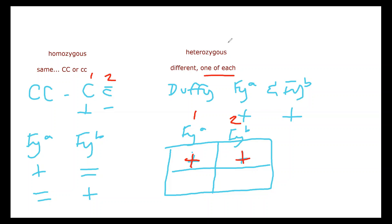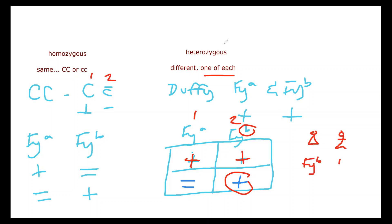If you have the opposite — negative for FYa and positive for FYb — that's homozygous. Homozygous for which one? Homozygous B, because your positive is with B and negative for A. They're co-dominant, so you get one from mom and one from dad. If you're only positive for B, that means you got an FYb from mom and an FYb from dad.